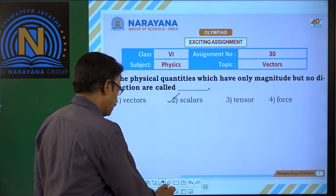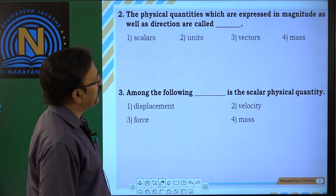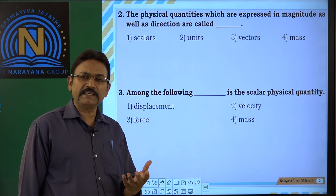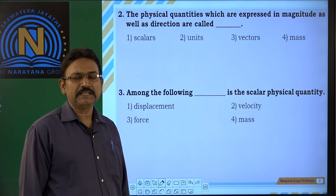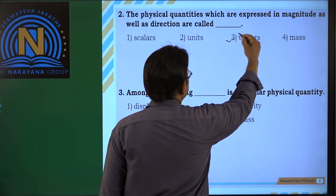Let us see next one. The physical quantities which are expressed in magnitude as well as direction. Which physical quantities have both magnitude and direction? They are called vectors. So, vector quantities, that is the third option.